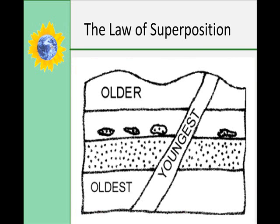The law of superposition tells us that the rock layers on the bottom of an undisturbed rock face are usually the oldest. Lower layers must be in place before younger rocks can be deposited on top of them, so geologists can date the relative ages of the strata from bottom to top, oldest to youngest. The law of superposition does have exceptions — various processes can cause younger layers to be below older layers. The key is that rock is always older than the processes that change it.